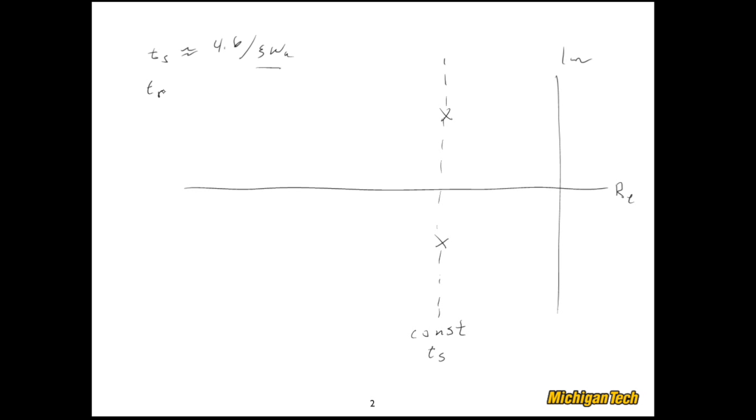Now let's look at the rise time. That was about 1.8 over omega n. Well omega n is the distance from the origin of the complex plane out to the pole.